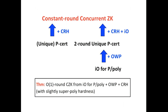In summary, we get constant-round concurrent zero-knowledge using unique P-certificates. We can do it with the non-interactive version and even better with the two-round version, which itself can be constructed from IO. Our proof can be generalized to even more non-interactive versions, not necessarily two-round, as long as every prover's message is unique.